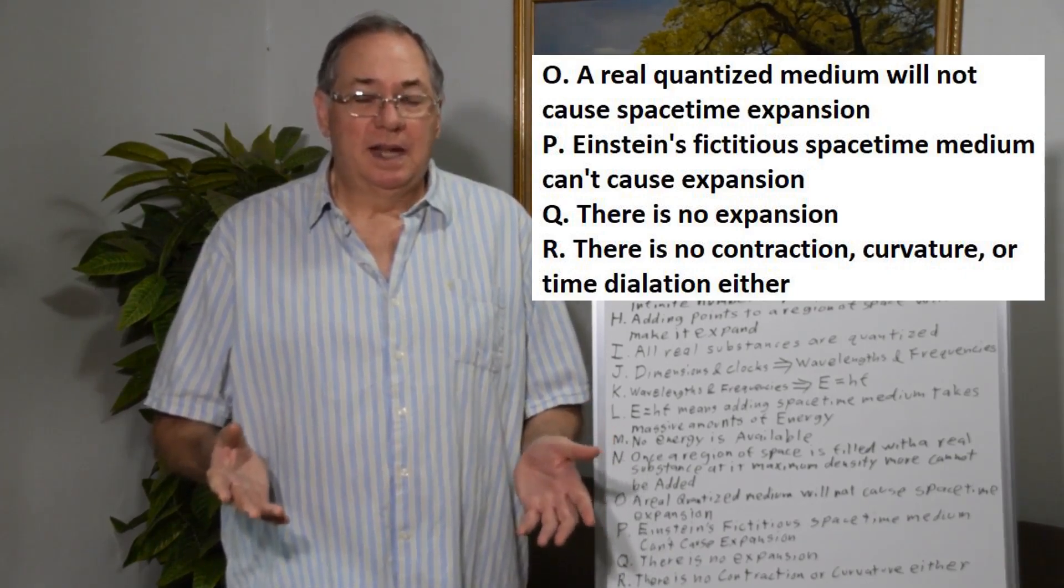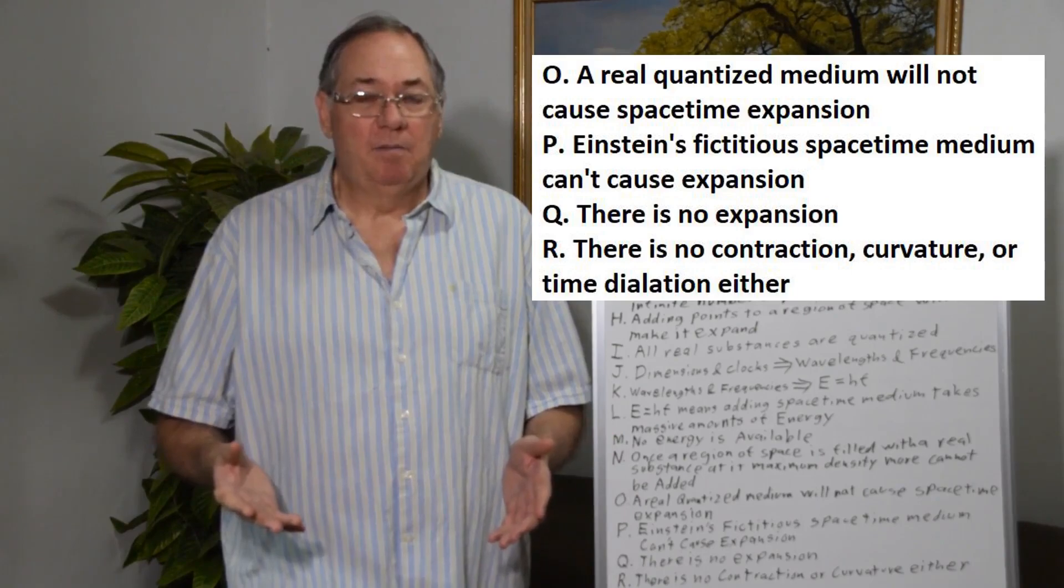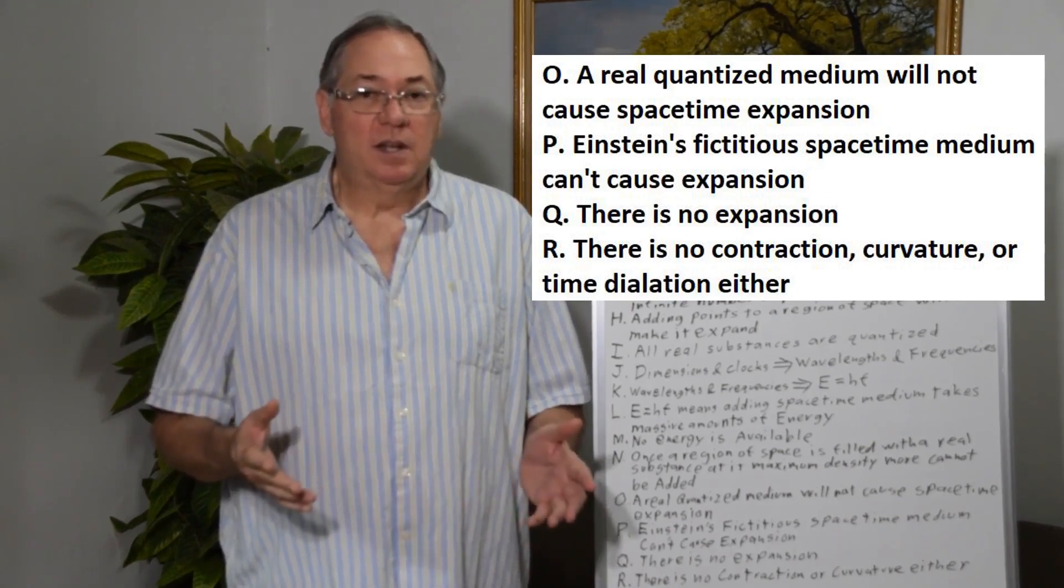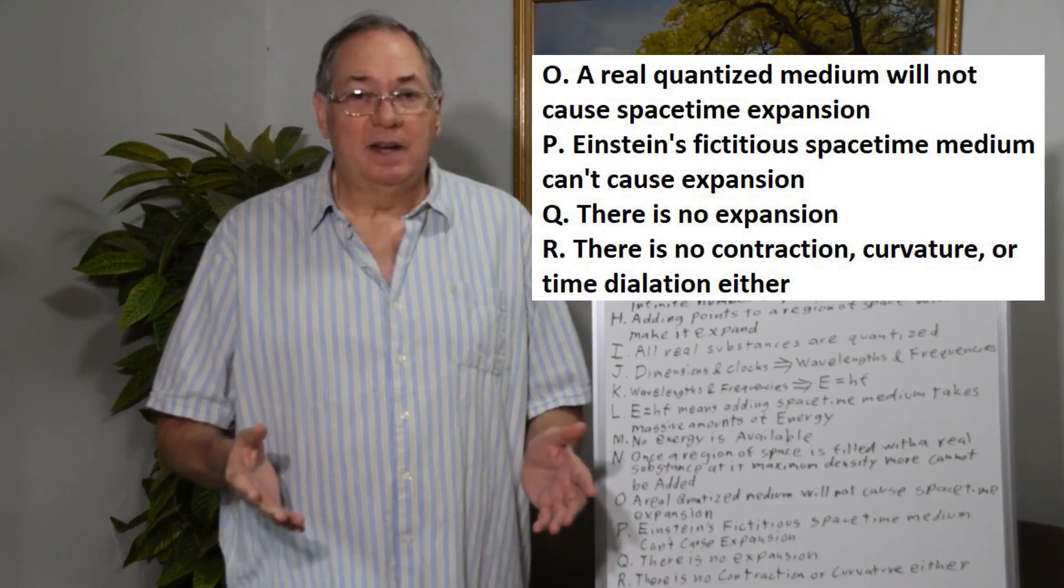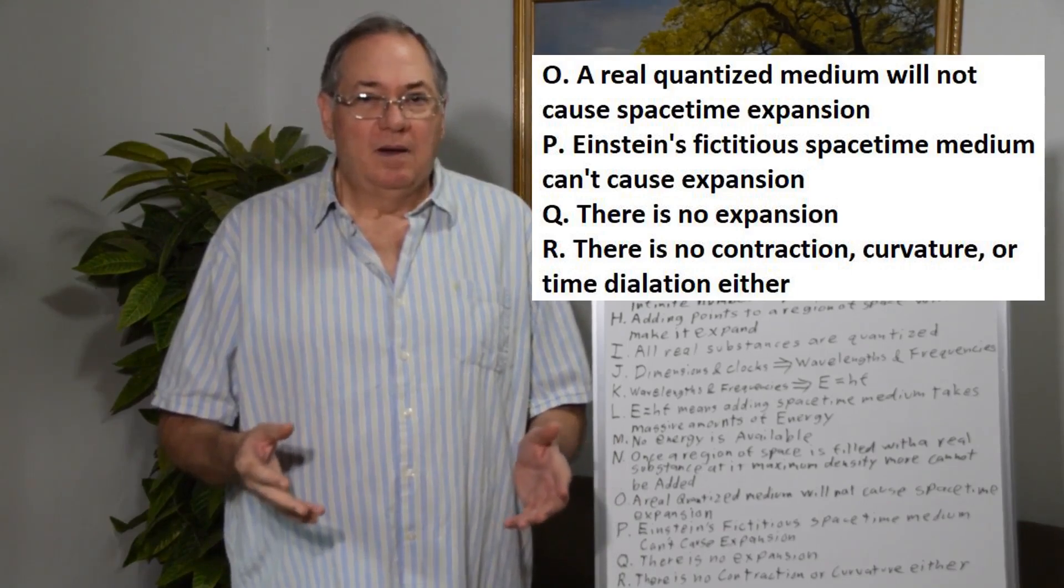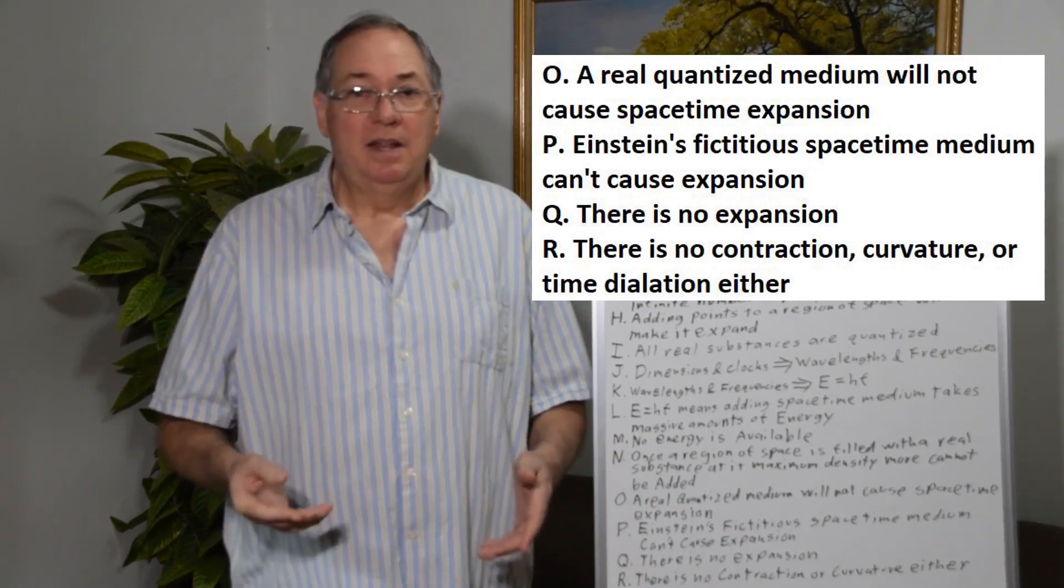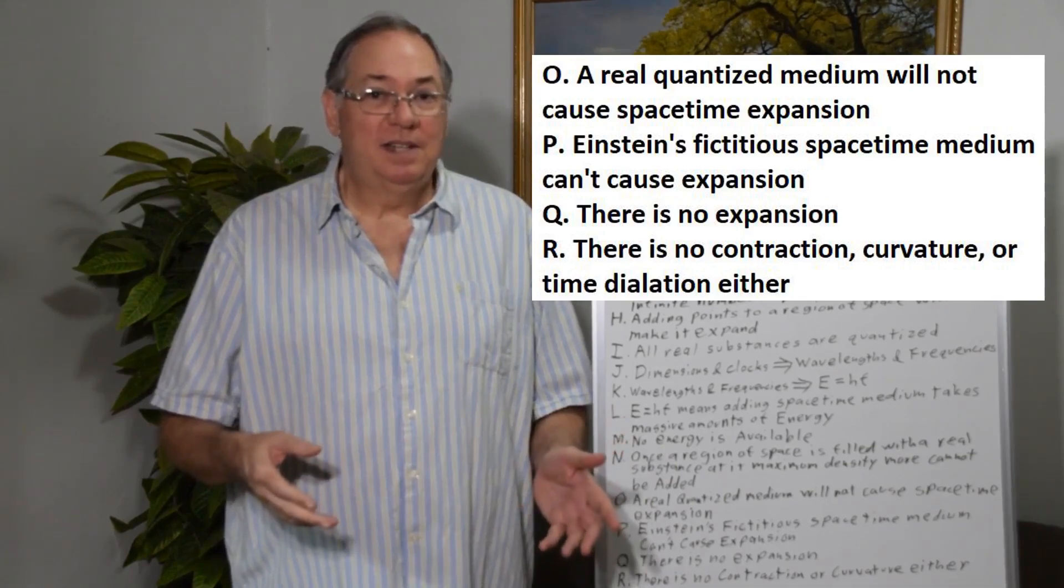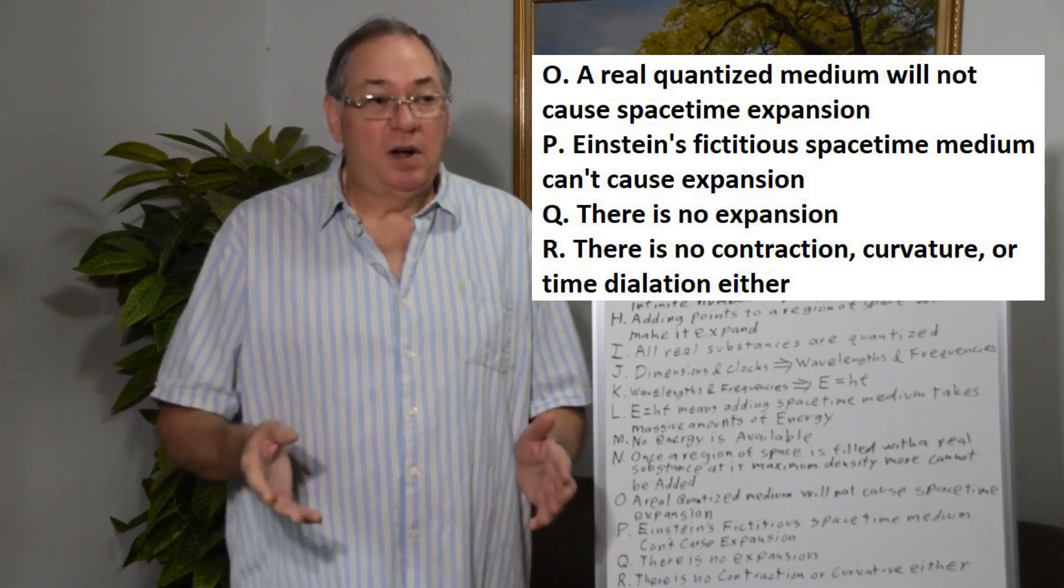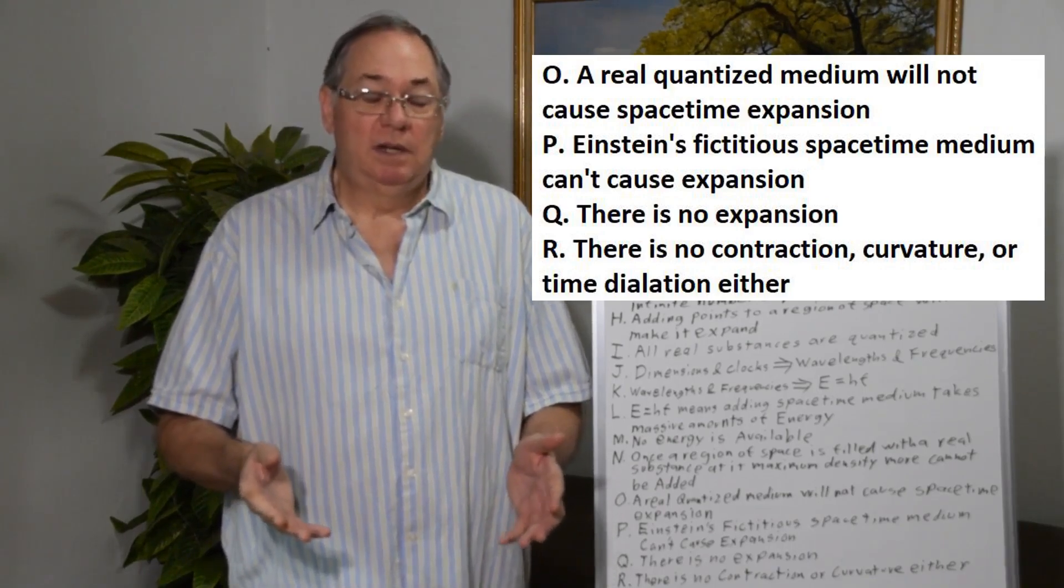So there is no expansion. Expansion of space-time is a logical impossibility. This field of quantized particles, which is essentially the quantum field, doesn't expand. It has particles that occur between the particles, but it doesn't get bigger. And just as importantly, there's no contraction of space-time, there's no curvature of space-time, there's no dilation of clocks. Special relativity and general relativity work different than the way proposed by Einstein, so they need to be reworked starting with a quantized medium as a basis, as a field from which the relativity effects arise.